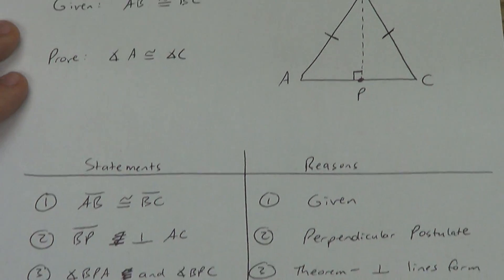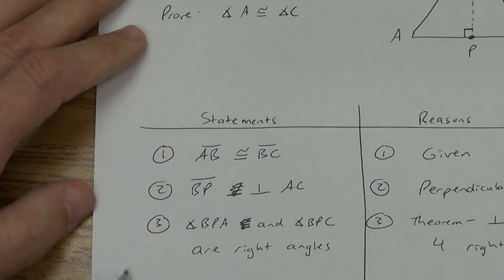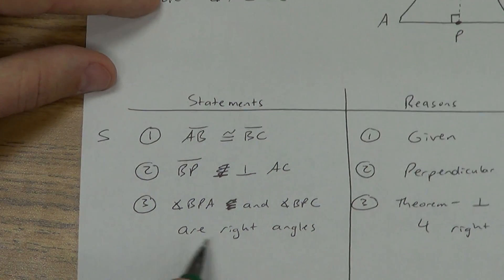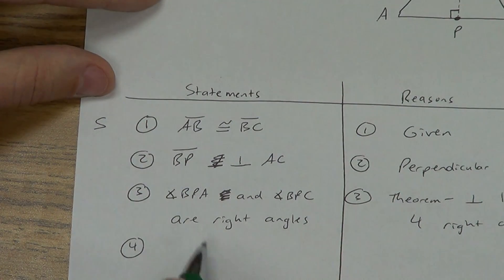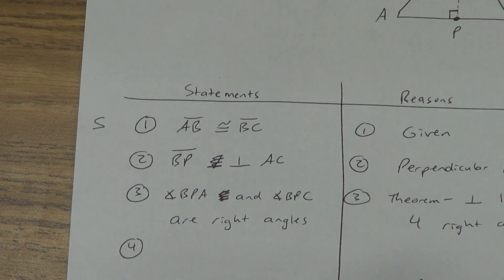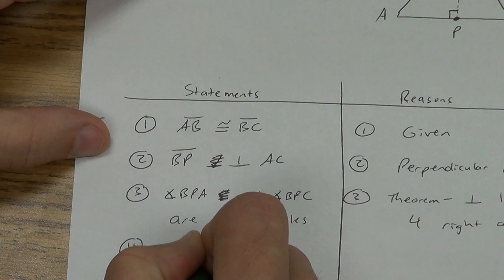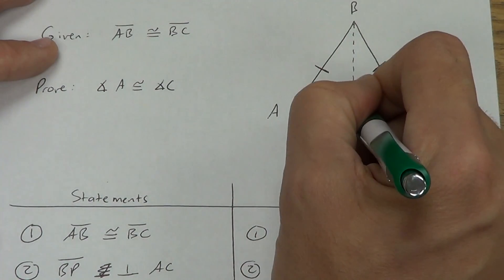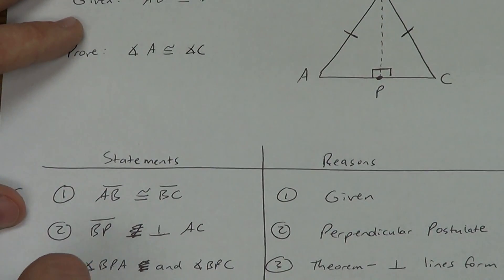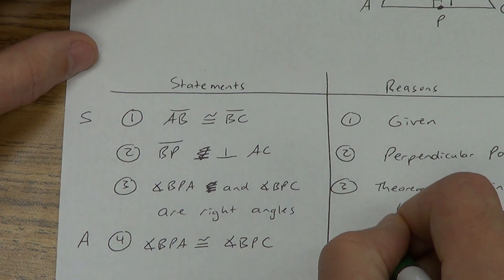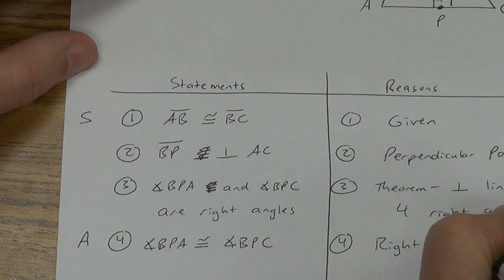Hopefully you're starting to see that we now have two triangles. I'm going to put an S for side off to the side. I need more information, so let's talk about these angles. What do we know about all right angles? They are congruent to each other. Angle BPA is congruent to angle BPC. I'll mark that in my picture with an A for angle, and the reason is the right angle congruence theorem.